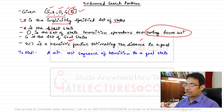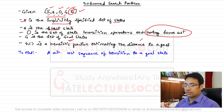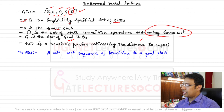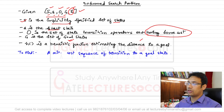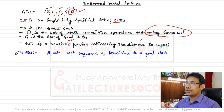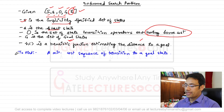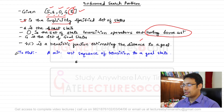H is the heuristic function estimating the distance to the goal from a particular location. The main goal is to find the minimum cost sequence of transitions to the goal states, assuming small s represents the start state.